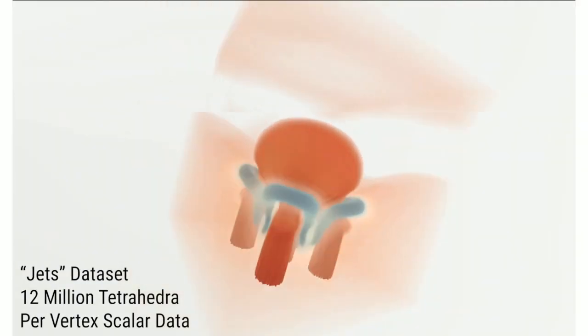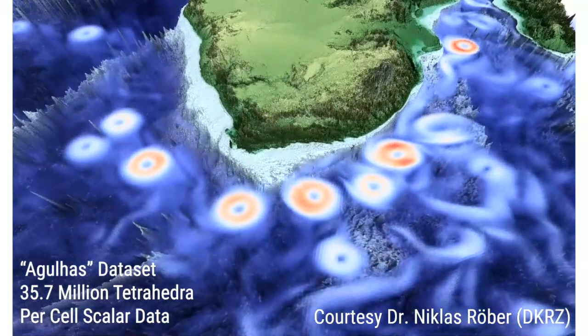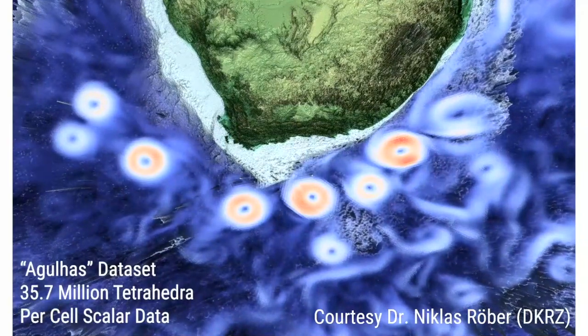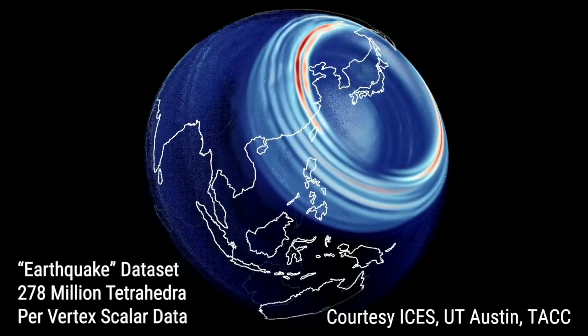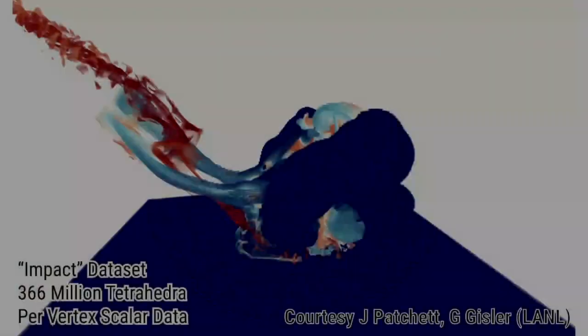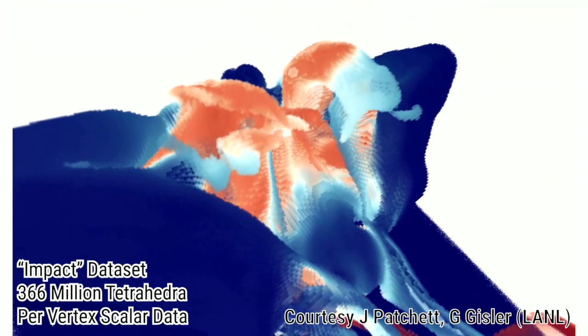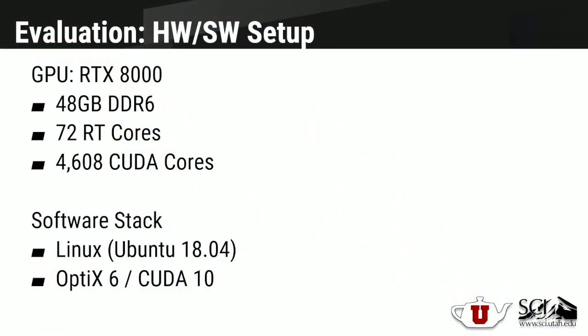To evaluate our approach we tested on a variety of data sizes. The first is the smaller JETS dataset with 12 million tetrahedra. We have a medium-sized dataset with 35.7 million tetrahedra, roughly three times larger. Then a larger TAC Japan earthquake dataset with 278 million tetrahedra — about eight times larger than the medium set and approximately 30 gigabytes. Finally, an impact dataset with 366 million tetrahedra, about ten times larger than the medium set and roughly 37 gigabytes. We used an RTX 8000 with 48 gigabytes of memory to fit all datasets, and the software stack is OptiX 6 and CUDA 10.